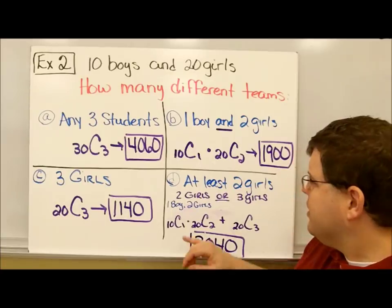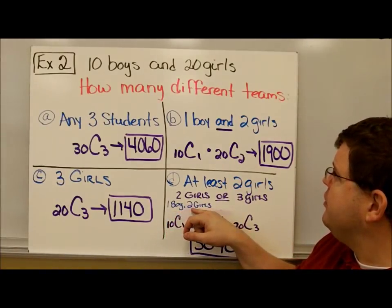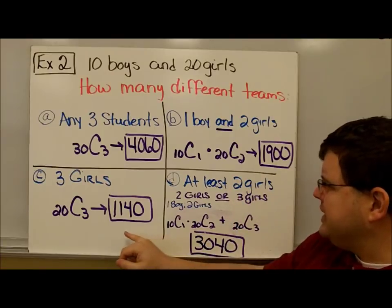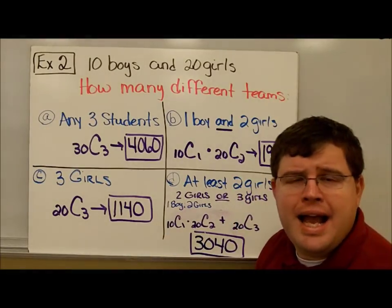So you notice that really what this is: here's the one boy and two girls, that's this amount up here. Three girls, that's this amount here. And it's just those really added together.